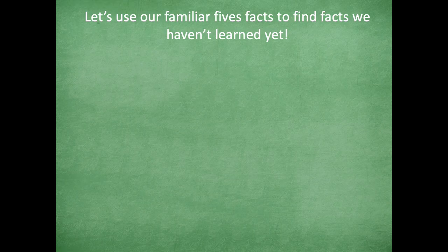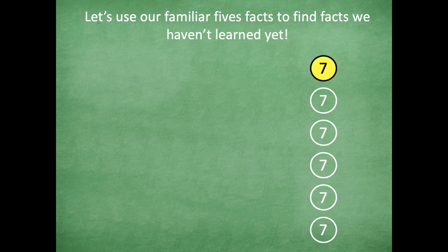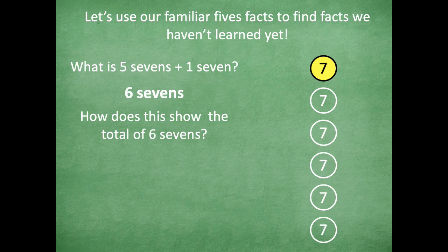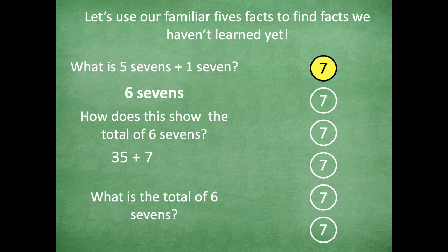So let's use our familiar fives facts to find facts we haven't learned yet. Those fives — count by fives: five, ten, fifteen — are so much easier to use. So anytime you can break apart something using the distributive property, it's super helpful with those fives. Here I have five sevens and one seven. What's five sevens plus one seven? Yeah, six sevens. Five times seven is 35, plus one seven is seven. So 35 plus seven equals 42. Six sevens equals 42.